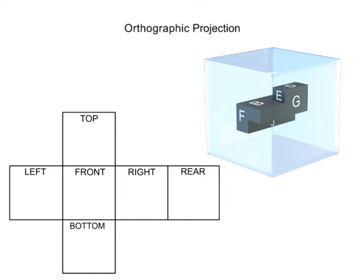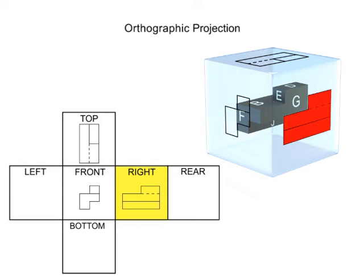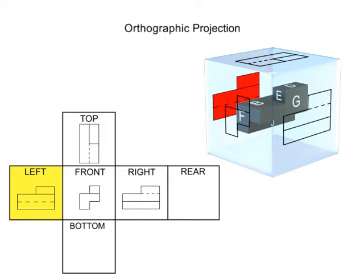The three views normally shown using the orthographic method are the top, front, and right side. Objects are typically drawn so that the most complex view is the front view, even if this does not correspond to the front of the part. If the three views are not enough to show all the details required, additional views are added until sufficient detail is shown.